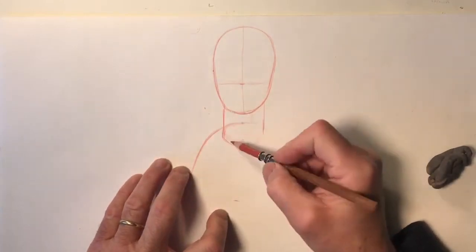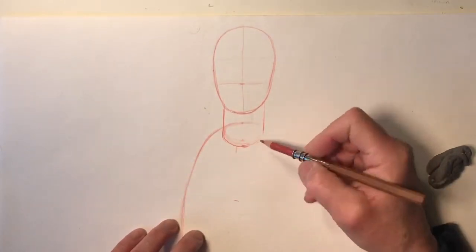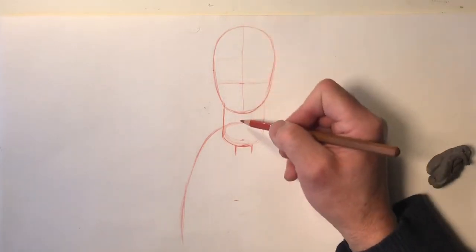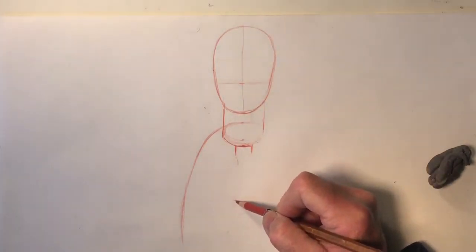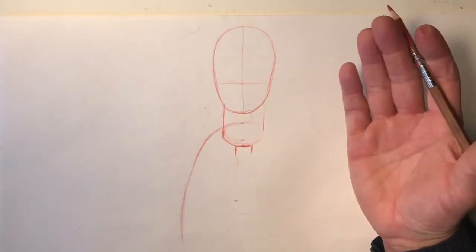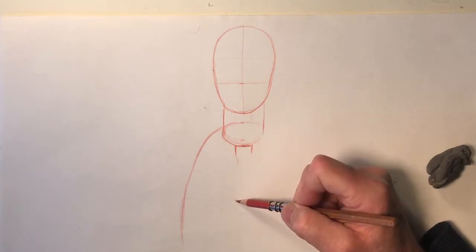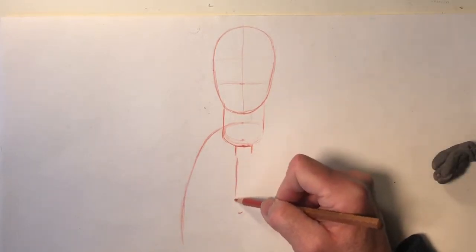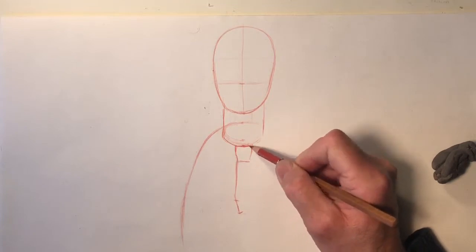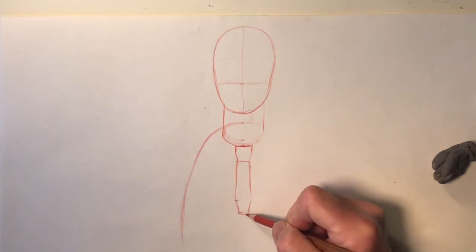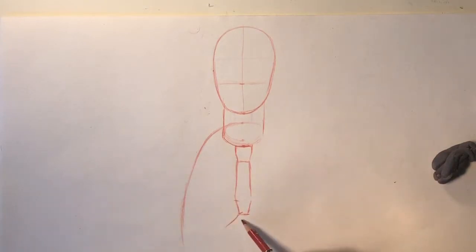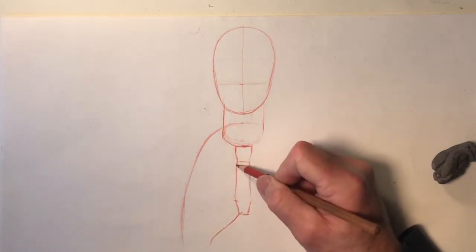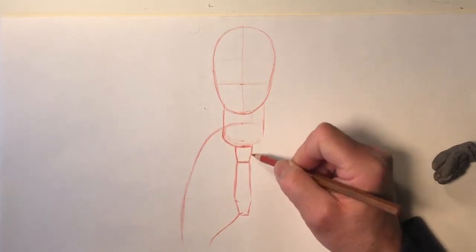Now I'm going to place the sternum. How long is the sternum? It's less than the measure of the head. If you come down one head from the chin, you go a little bit lower than that — that's the measure of the sternum. The end of the sternum also corresponds to the top of the costal arch.